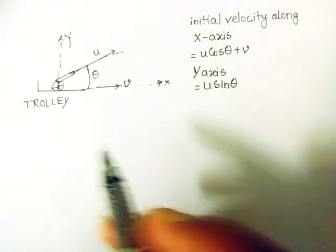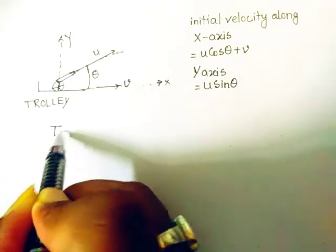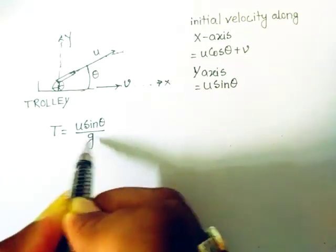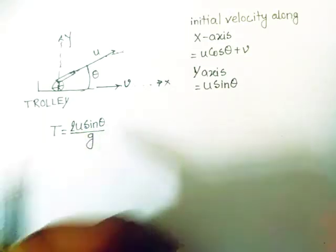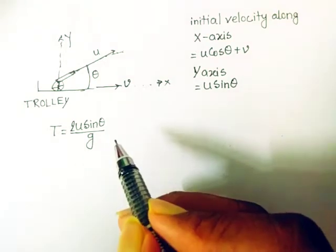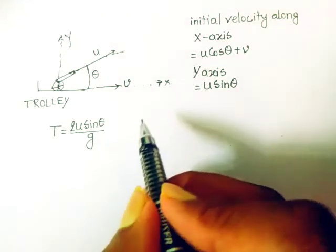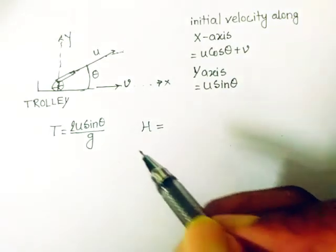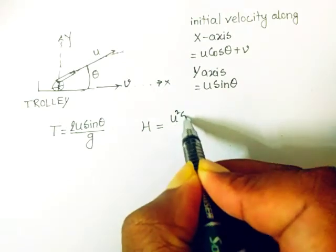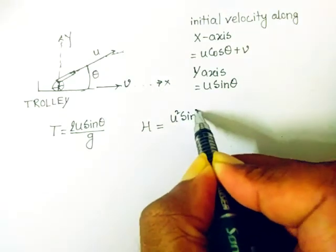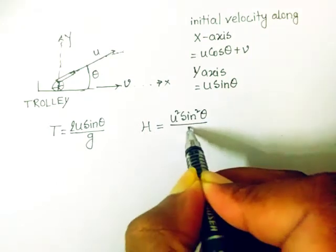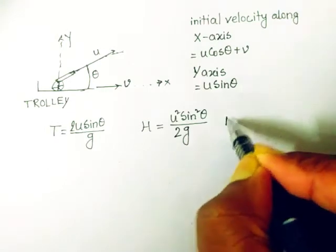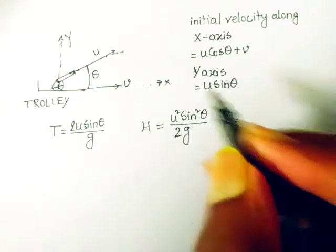Therefore, the time of flight T is equal to 2u sin theta divided by g, and the maximum height is equal to u squared sin squared theta divided by 2g — these remain unchanged. Now the range changes because it depends on the initial velocity along the x-axis.